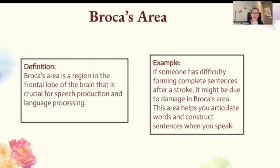Broca's area. Broca's area is a region in the frontal lobe of the brain that is crucial for speech production and language processing. So if someone is having difficulty forming complete sentences — like after a stroke — it might be due to damage to Broca's area. This area helps you articulate words and construct sentences when you speak.